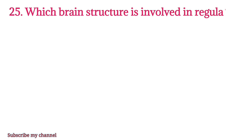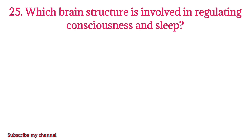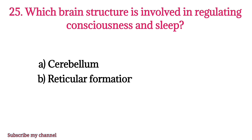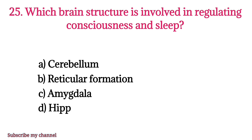MCQ number twenty-five: Which brain structure is involved in regulating consciousness and sleep? Option A: cerebellum, option B: reticular formation, option C: amygdala, option D: hippocampus. The right option is option B.